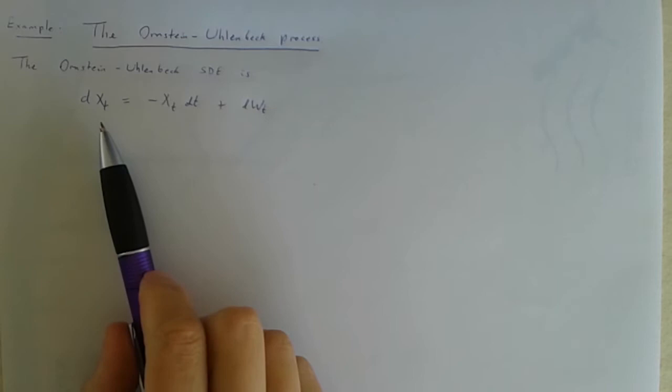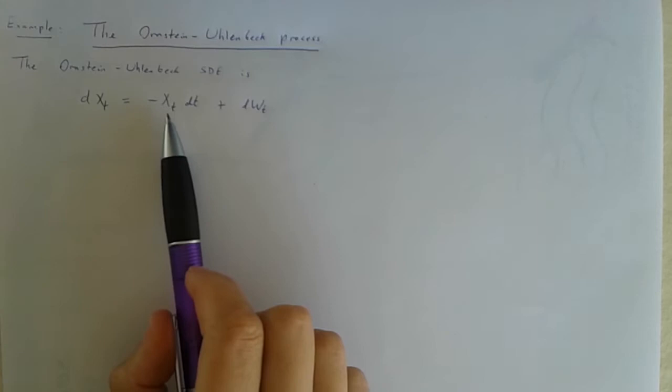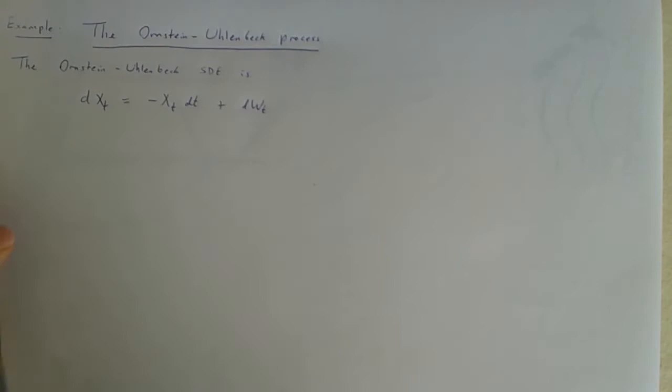So we're specifying here that an Ito diffusion xt is to have drift which is minus itself and speed one. What does this mean?